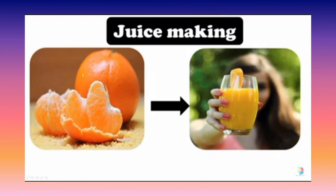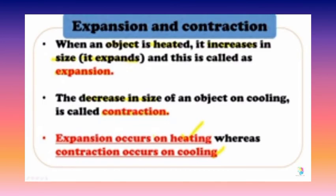Next, expansion and contraction. When heat is applied to an object, its size increases — this is called expansion. When cooled, the object's size decreases — this is called contraction. Metals expand on heating and contract on cooling.